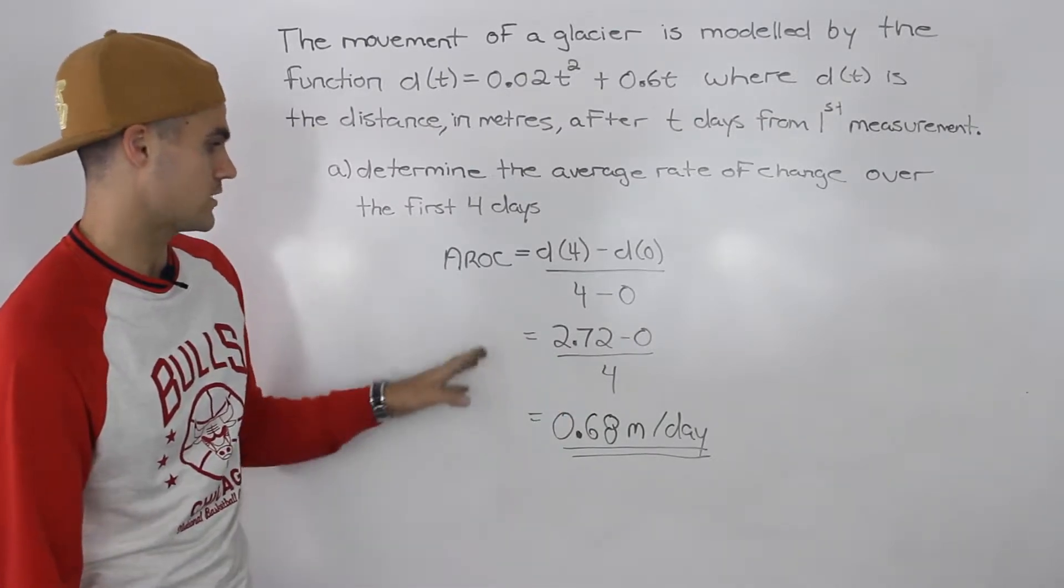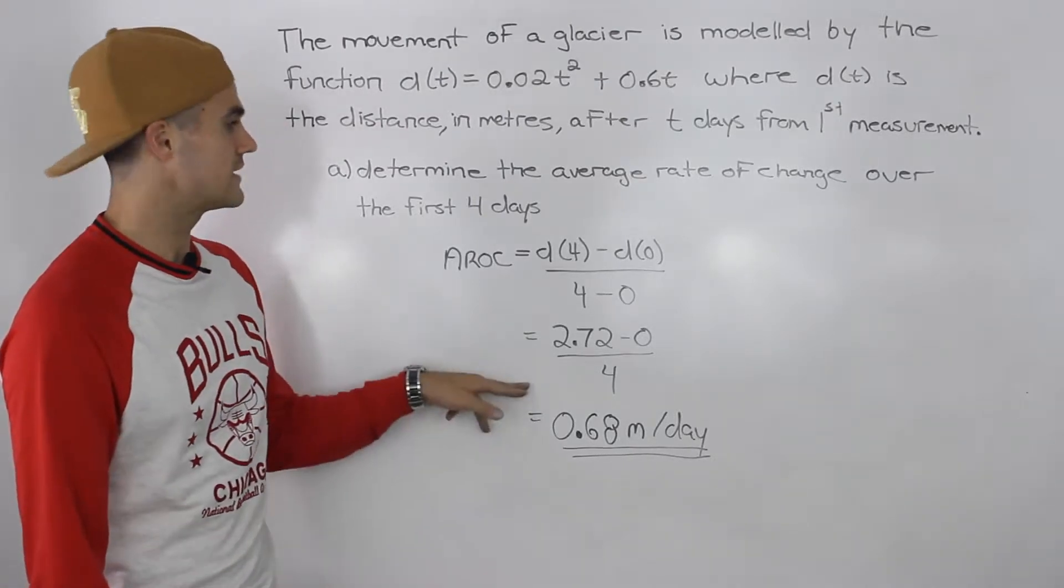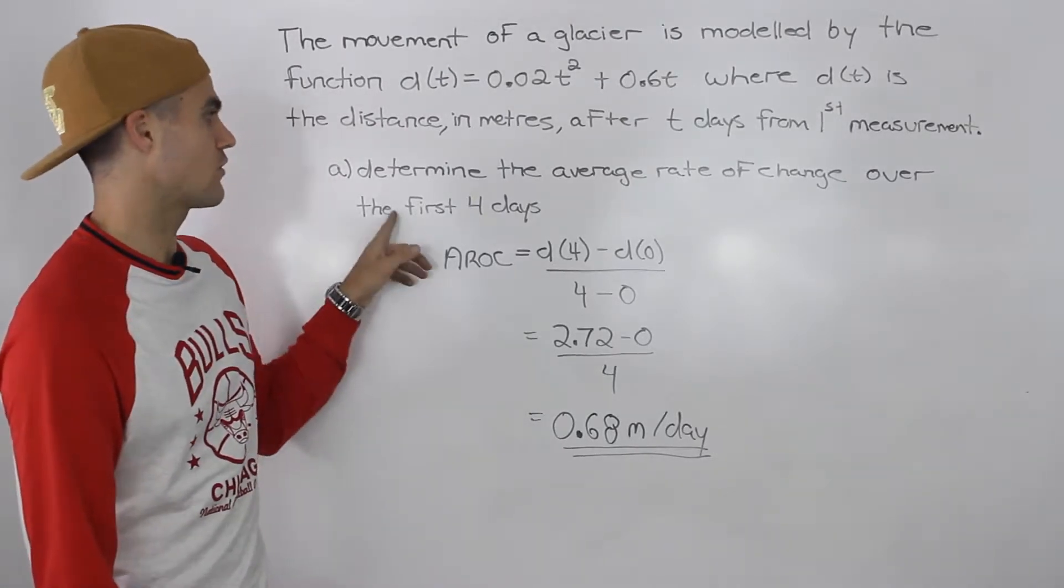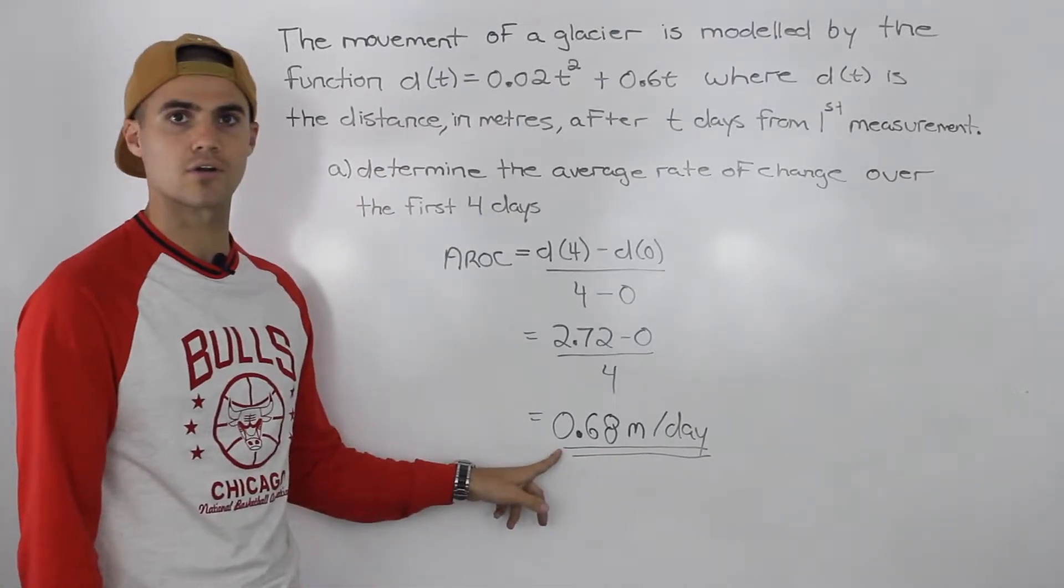When you do that calculation, you get 0.68 meters per day. So that is the average rate of change over the first four days for the movement of this glacier: 0.68 meters per day.